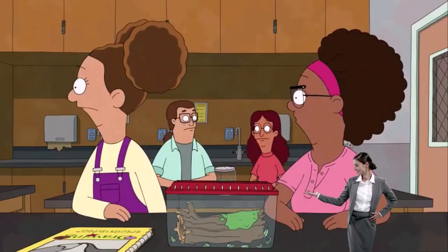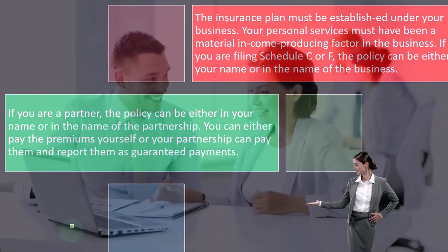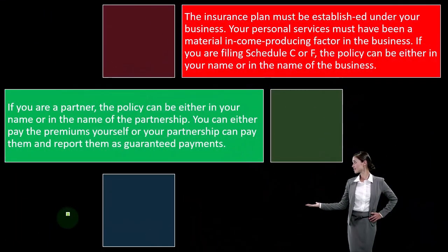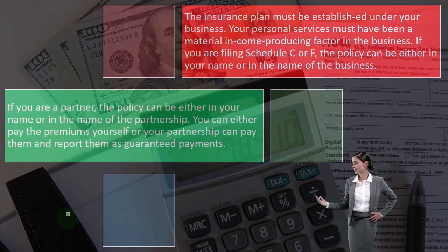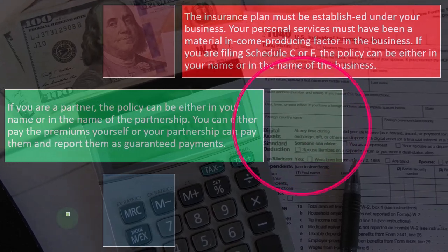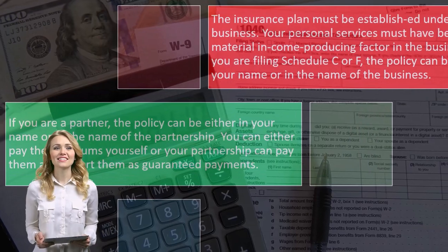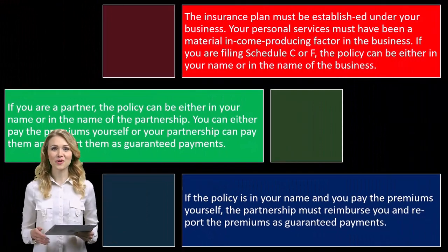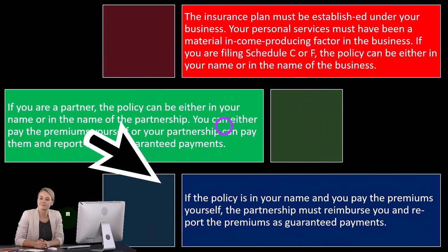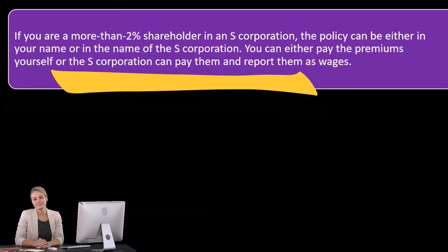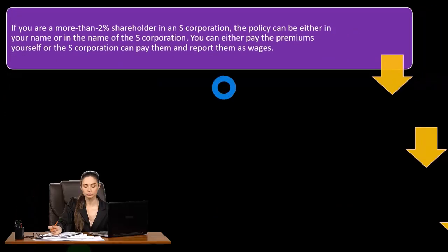If you are a partner, the policy can be in your name or in the name of the partnership. In a partnership you typically file a separate return, but income still flows through to your 1040, so you still have the Social Security and Medicare self-employment tax calculation. You can either pay the premiums yourself or have the partnership pay them and report them as guaranteed payments. If you pay the premiums yourself, the partnership must reimburse you and report them as guaranteed payments.